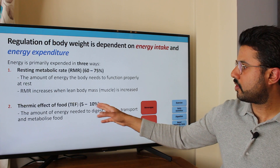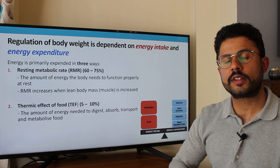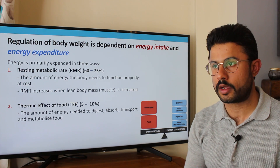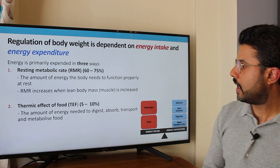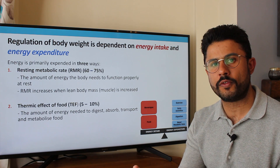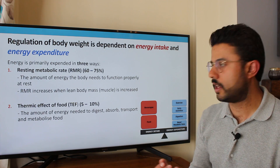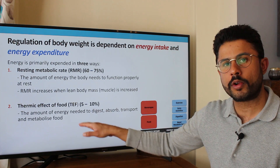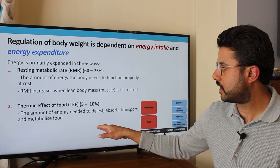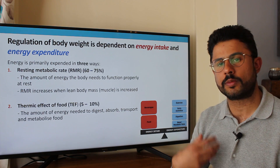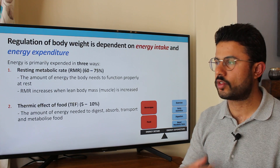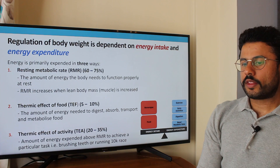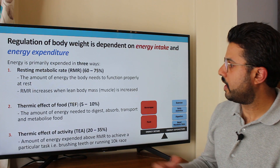The second factor is the thermic effect of food. When we eat, we need to process that food, so a number of digestive processes occur — peristalsis, muscular contractions, churning, and enzymatic breakdown — all of which require energy. This accounts for about five to ten percent of energy expenditure. We have no control over this; it's an involuntary process the body regulates itself, representing the energy needed to digest, absorb, and transport the food we've eaten.